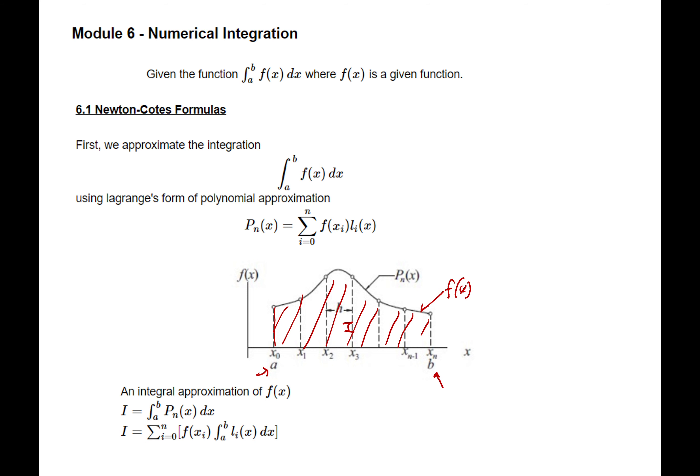Basically, we want the area under the curve f of x. This can be expressed as a polynomial. So we have individual areas: A1, A2, A3, and so on until An — there are n panels or n partitions. By adding all the areas, you get the integration value. The curve can be expressed as a polynomial Pn of x — it can be a straight line, or a curve of third, fourth, or fifth degree.